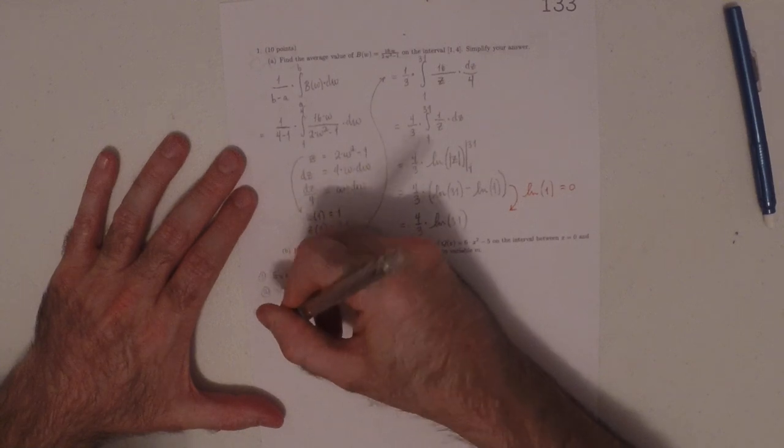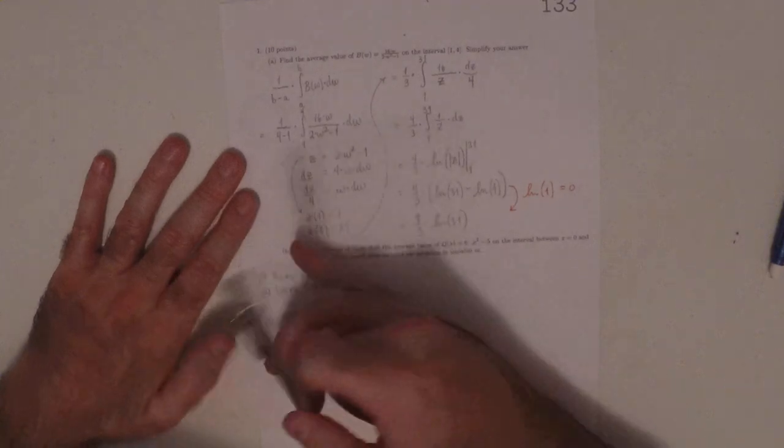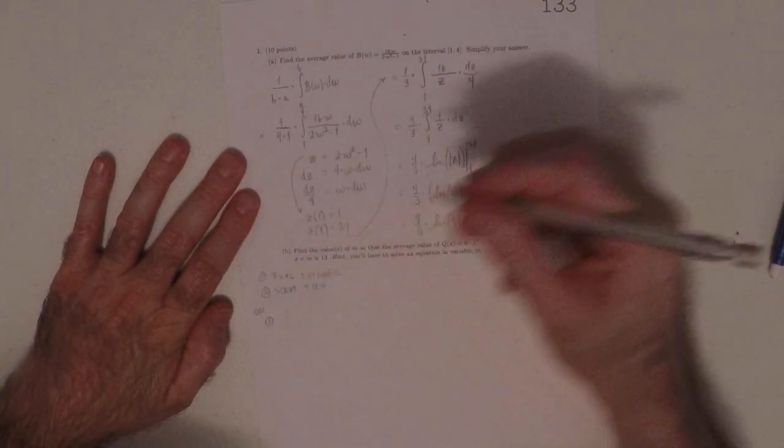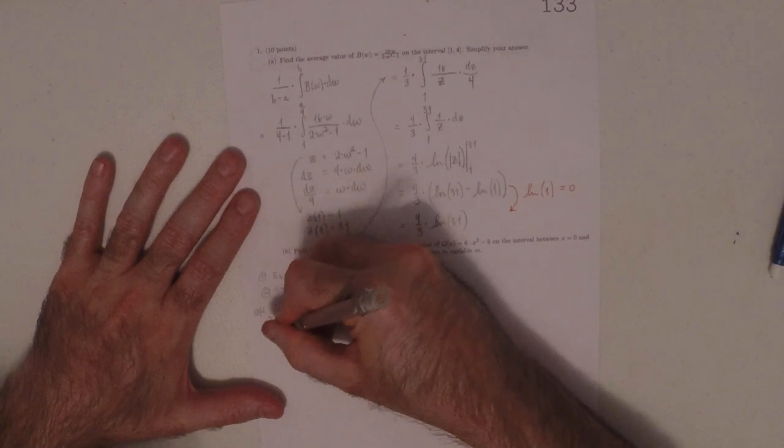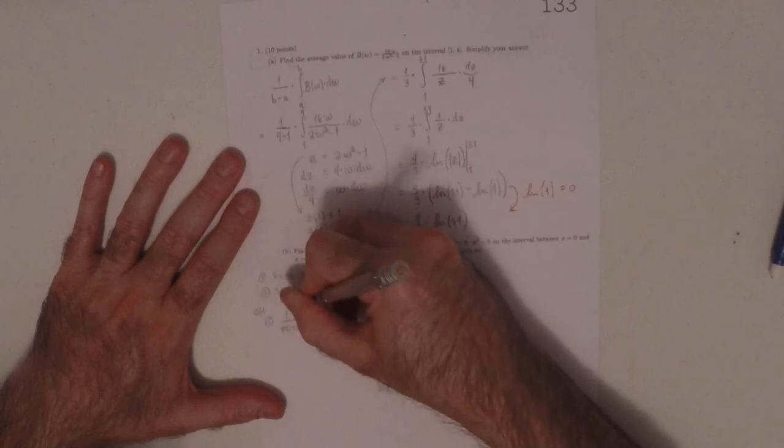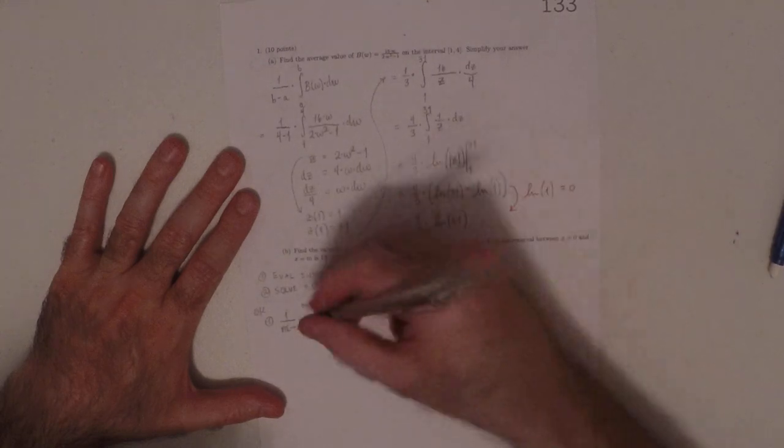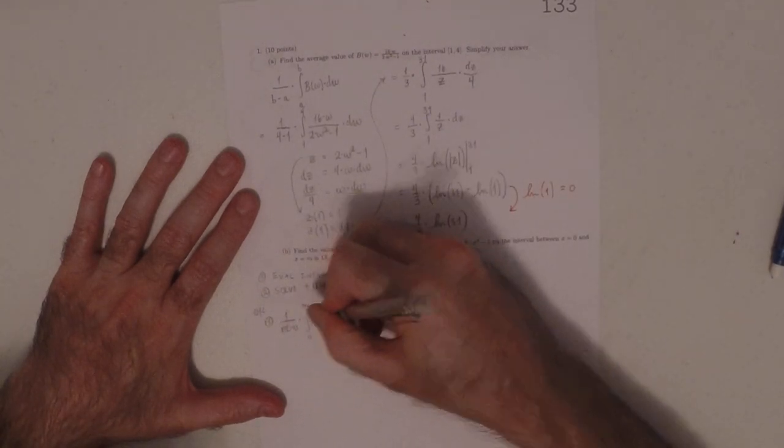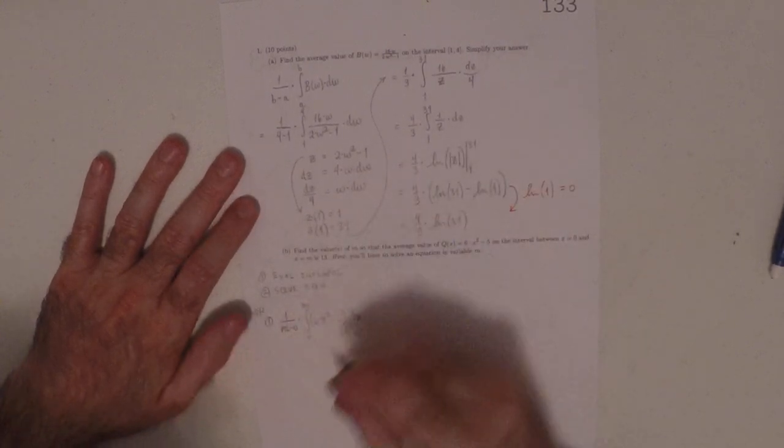The integral is an average value integral. So then it will be 1 over m minus 0, integral 0 to m, and then 6x squared minus 5 dx.